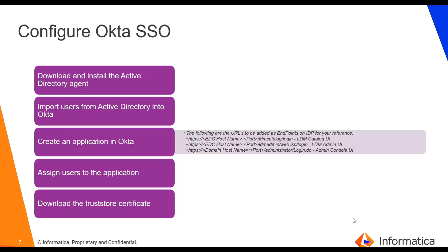Now we are done with configuring Active Directory and syncing users from Active Directory to the Informatica domain. The next step is to configure Okta SSO. The first step is to download and install the Active Directory agent on the domain machine from where we can access the Active Directory domain. Then we will import users from Active Directory into Okta, followed by creating an application in Okta where we will provide URLs for which we want to enable single sign-on — the Administrator URL, EDC Catalog URL, and EDC Catalog Admin URL. We also need to download the Okta trust certificate and import it into the Informatica trust store.